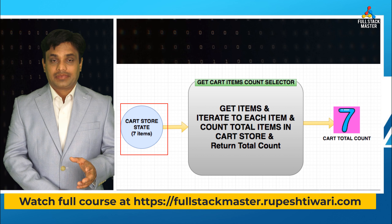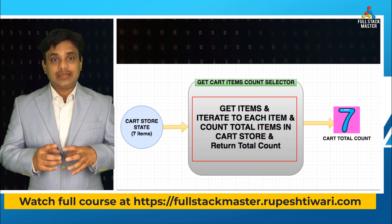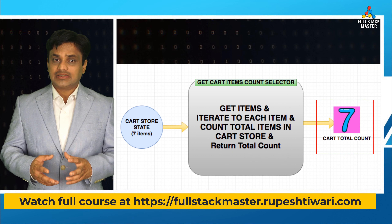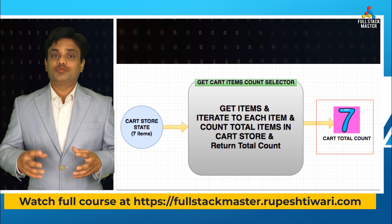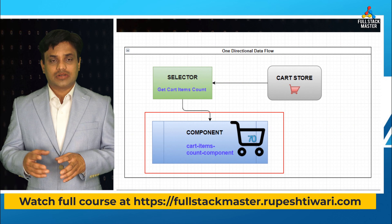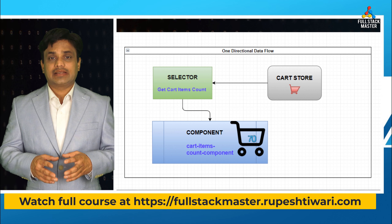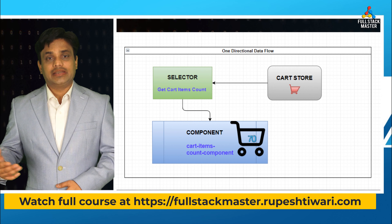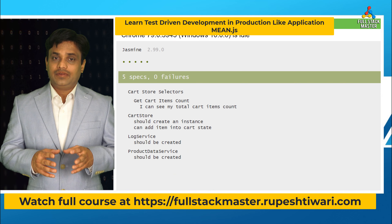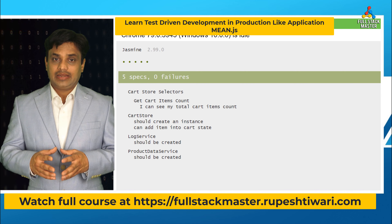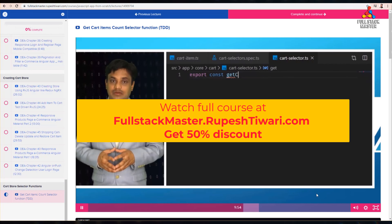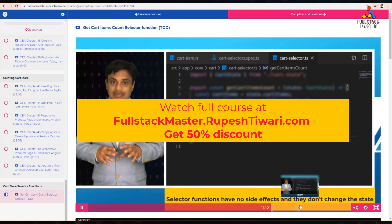We will write the `getCartItemsCountSelector` function. In this function, in order to find out the total cart items count, I need to get the entire cart items from the state, iterate through each item, get their quantity, keep summing them up, and finally return the total count. This function's input will be the cart state and the output will be the total items in the cart. We will create a cart items count component in our later videos which will use `getCartItemsCountSelector` to retrieve the total count and display it in the UI. Let us go ahead and write this function — we will write the unit test first in order to create this selector function and return the cart items count.